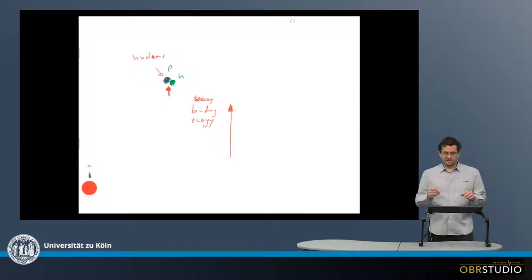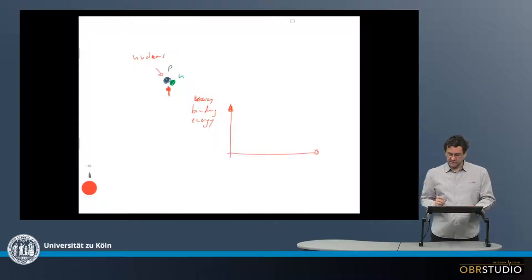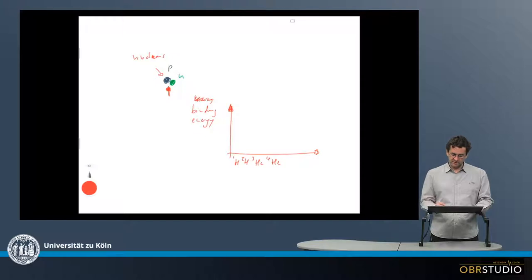And this will be on the y-axis. And on the x-axis there are the isotopes. So for example, there's hydrogen-1, hydrogen-2, and maybe helium-3, helium-4, and so on. So this would be hydrogen with one proton, one proton one neutron, two protons one neutron, and so on.